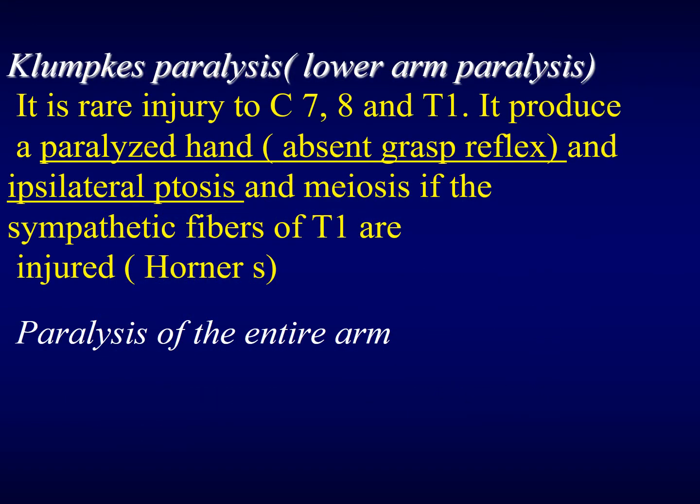Klumpke's paralysis is a rare injury affecting C7, C8, and T1. It produces a paralyzed hand with an absent grasp reflex. If the sympathetic fibers of T1 are involved, you will find the symptoms of Horner's syndrome — ptosis and miosis on the side of the injury.